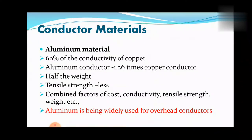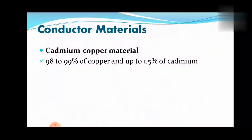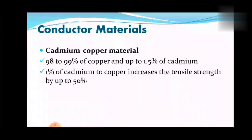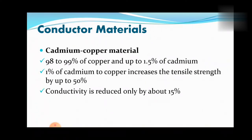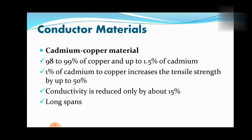Regarding cadmium copper material, cadmium copper alloys contain approximately 98-99% of copper and up to 1.5% of cadmium. Addition of about 1% of cadmium to copper increases the tensile strength by up to 50%, and the conductivity is reduced only by about 15%. Therefore, cadmium copper conductors can be useful for exceptionally long spans. However, due to the high cost of cadmium, such conductors may be uneconomical in many cases.